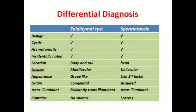In the differential diagnosis, the most important cystic mass which needs to be differentiated from spermatocele is the epididymal cyst. First of all, both epididymal cysts and spermatoceles are benign, both are cystic, both are asymptomatic, and both are incidentally noted. However, the location of the epididymal cyst is in the body or tail of the epididymis, while the spermatocele is present mostly in the head of the epididymis. The epididymal cyst is multilocular while the spermatocele is unilocular.